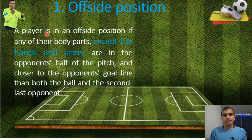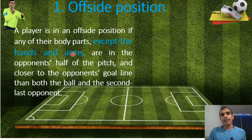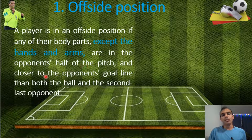First, the offside position. A player is in an offside position if any of their body parts — except the hands and arms, please note this is very important, hands and arms are an exception — are in the opponent's half of the pitch and closer to the opponent's goal line than both the ball and the second-last opponent.